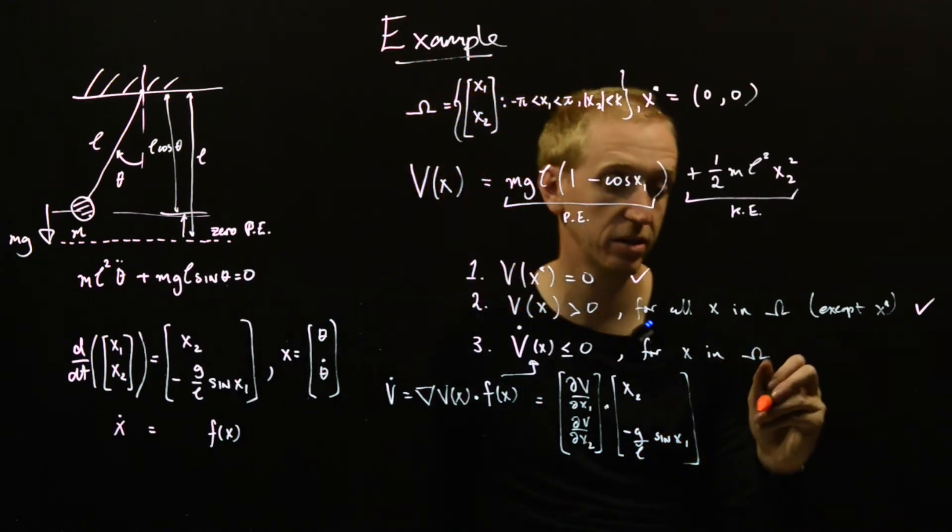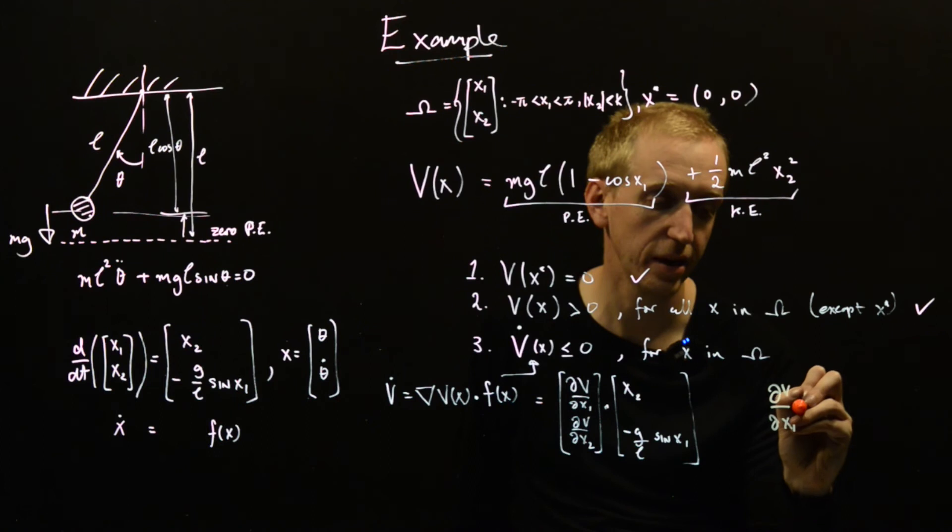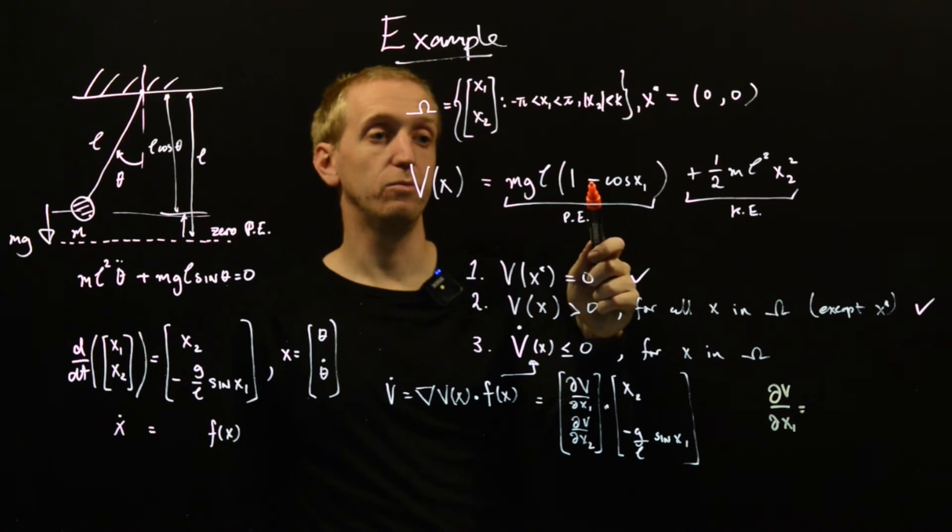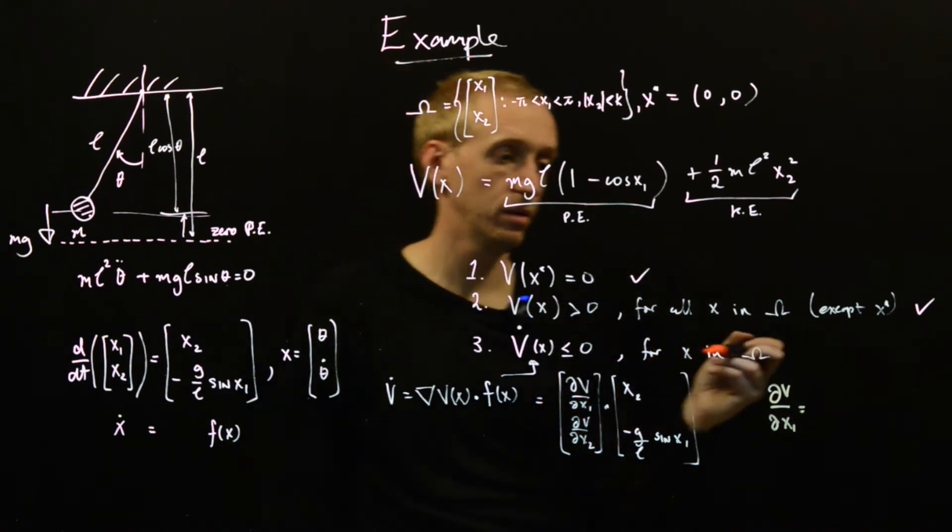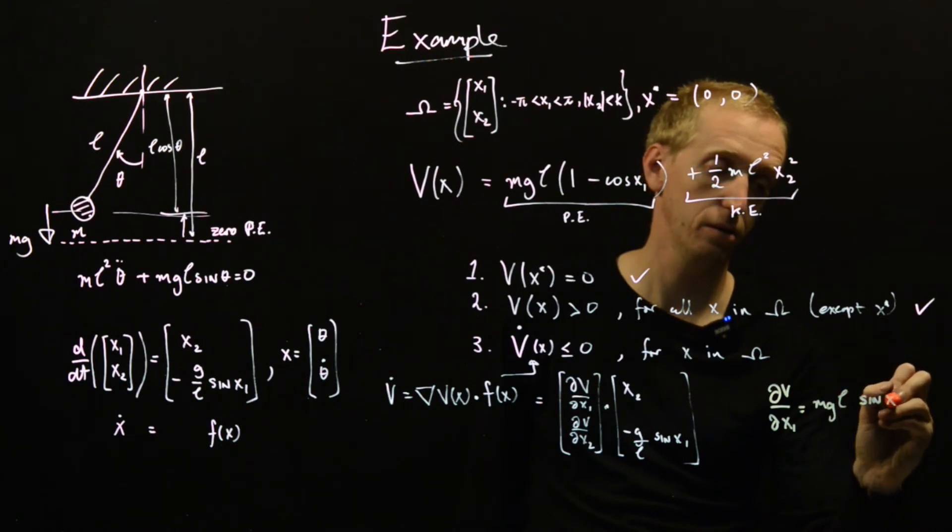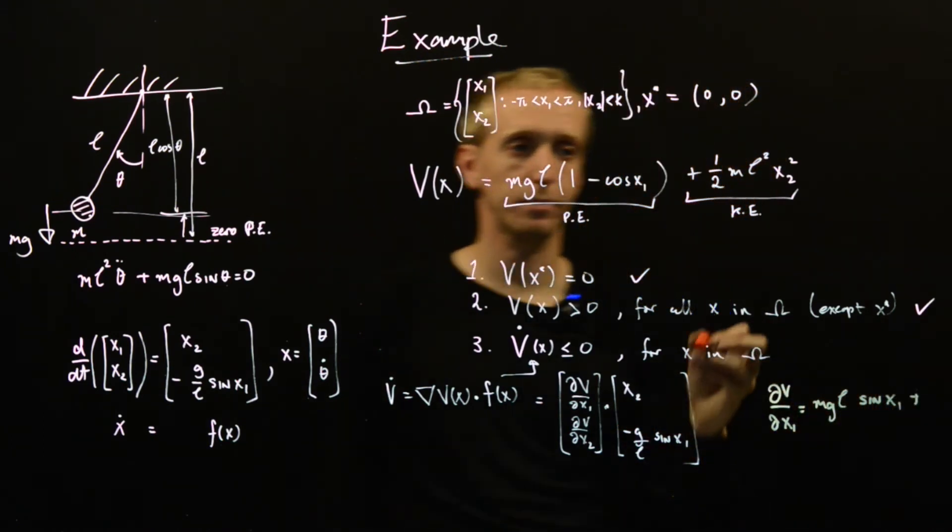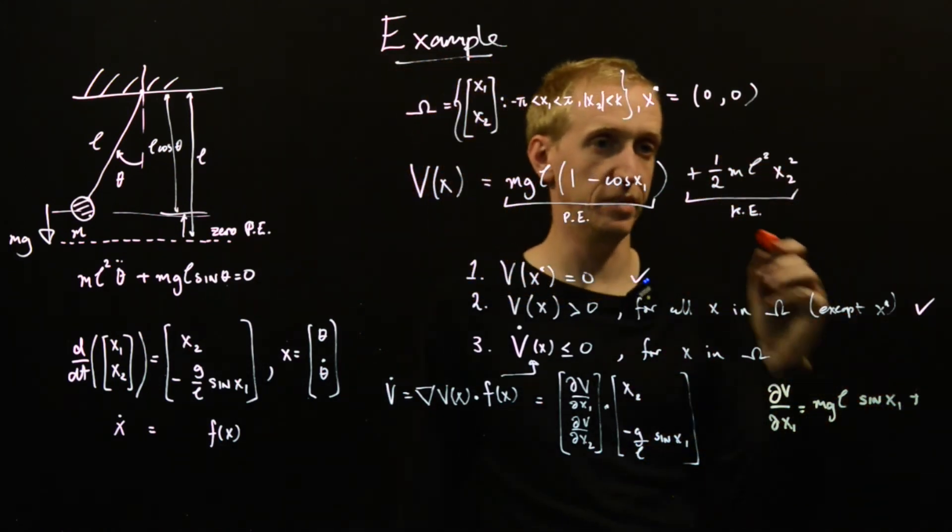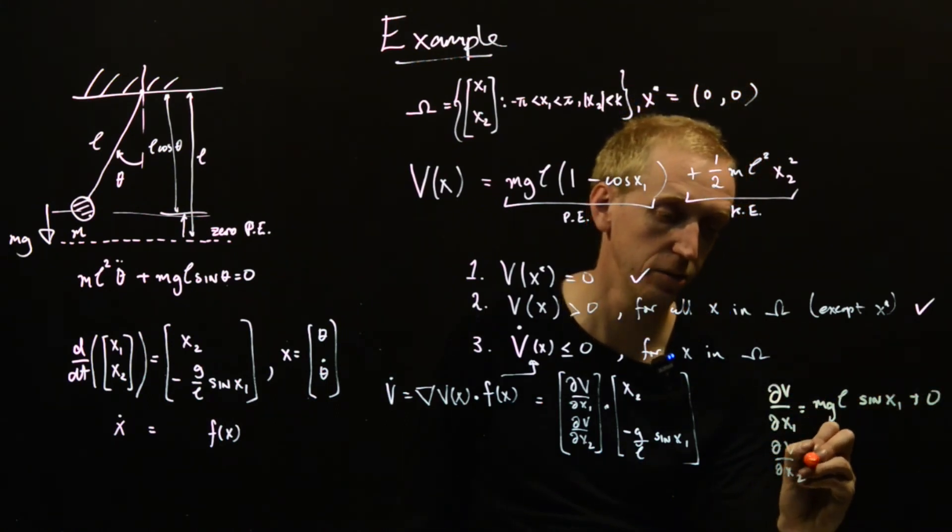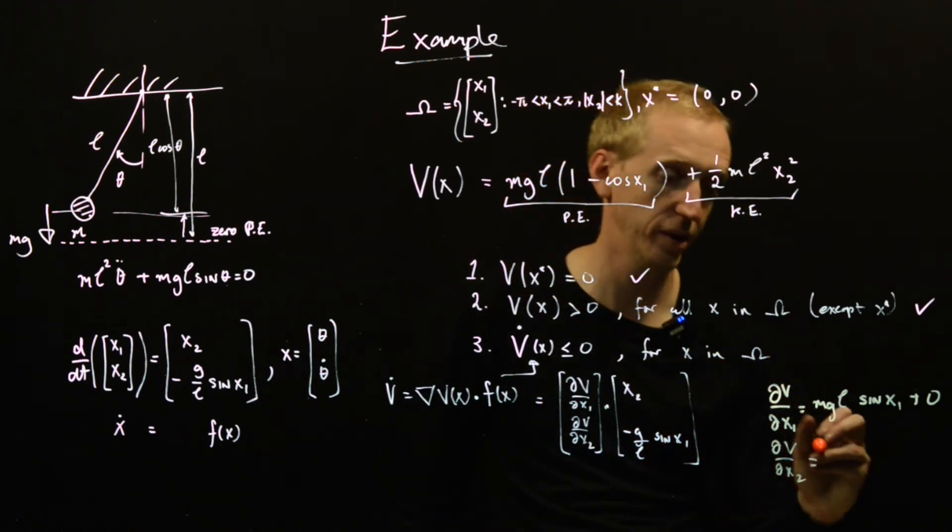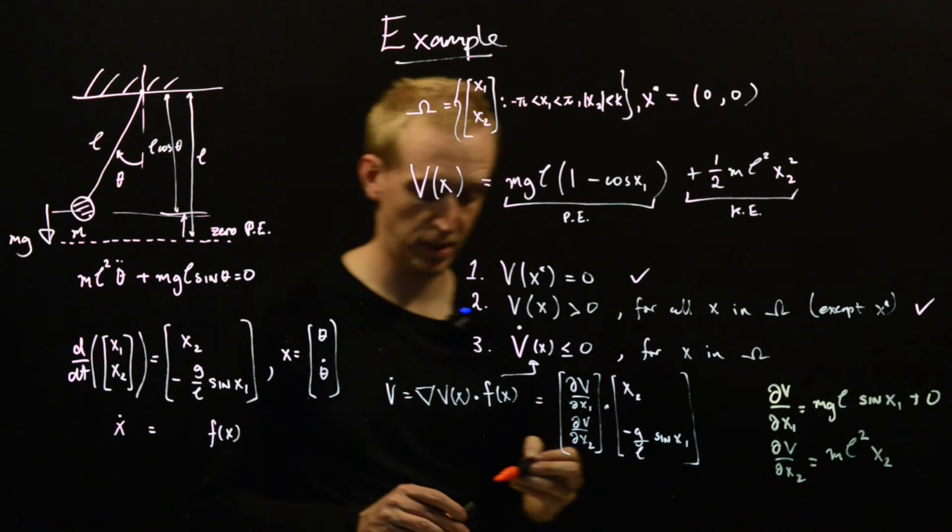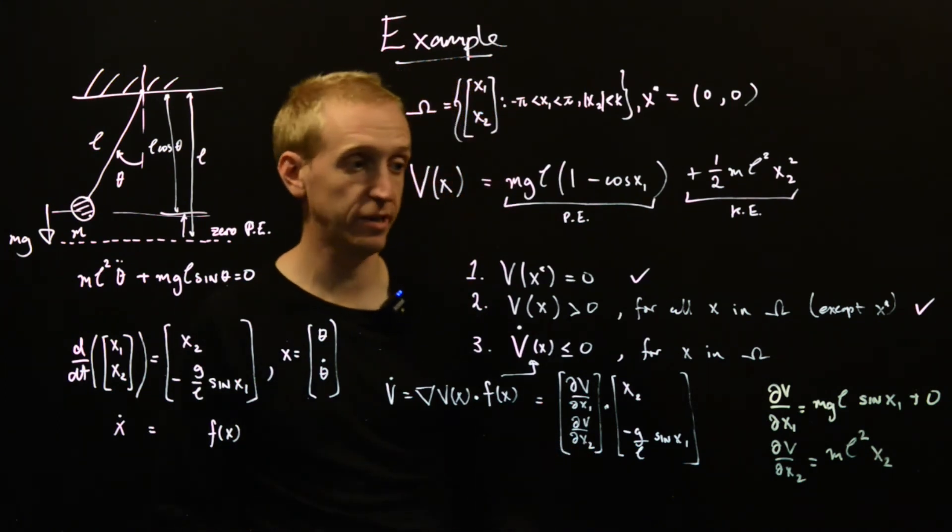We need to find the gradient of V, which is just dV dx1, dV dx2, dot producted with f of x, and f of x we have here. So here we have x2, here we have minus G divided by L sine of x1. So let's just work out these final pieces, dV by dx1 and dV by dx2. So dV by dx1, we just have to take the partial derivative of this with respect to x1. Then we differentiate minus cos, we get sine. So this thing is just MgL sine of x1. And now we need to differentiate this, but this doesn't depend on x1, so that's zero. And similarly, dV by dx2, well this doesn't depend on x2, so that's just zero. And here we have M L squared x2.